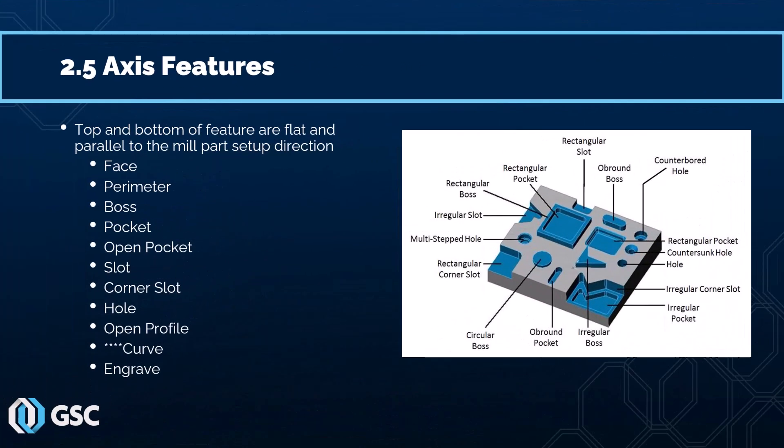The goal of this presentation is to take a look at how to define the different types of 2.5-axis milling features. We're going to go through each one and I'm going to show you an example of each one and how we define them in SOLIDWORKS CAM.